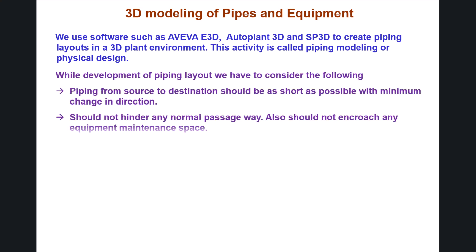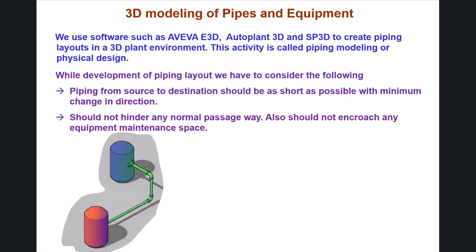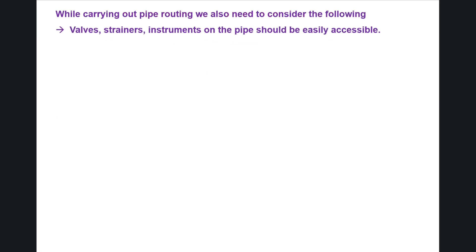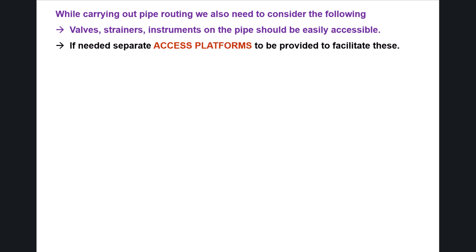While developing a piping layout, we have to consider the following: piping from source to destination should be as short as possible with minimum change in direction, should not hinder any normal passageway, and should not encroach any equipment maintenance space. While carrying out pipe routing, valves, strainers, and instruments on the pipe should be easily accessible; if needed, separate access platforms are to be provided.